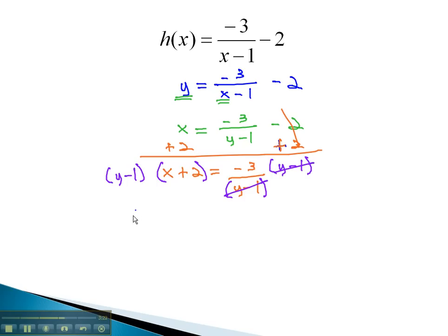Again, there's no advantage to multiplying this out, so we'll keep it as y minus 1 times x plus 2 equals negative 3. Now that we've got the fraction taken care of, we can start getting the y alone by getting rid of the factor of x plus 2. Dividing both sides by x plus 2 leaves us with y minus 1 equals negative 3 over x plus 2.